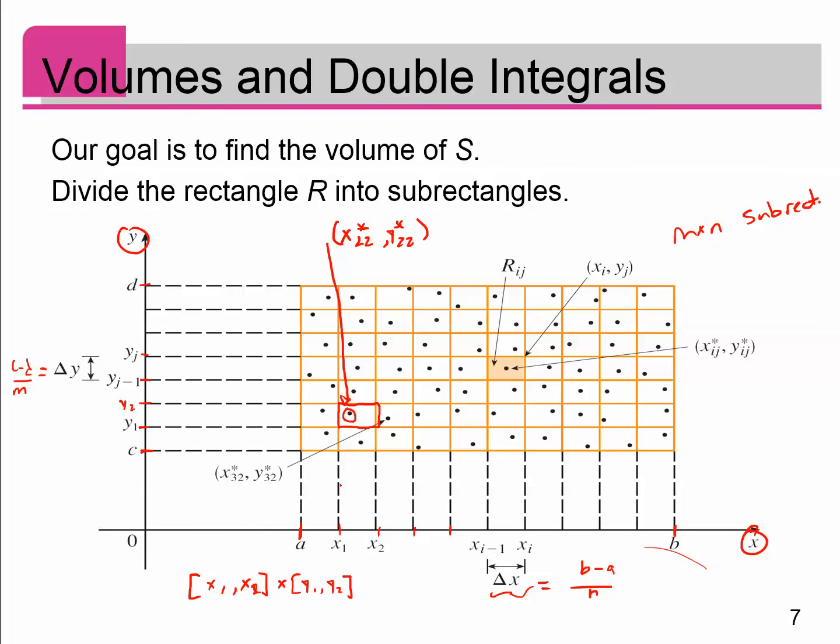So that's 2, 2, and then I'm going to pick a point out of there, call it x star, y star, and there are then, again, m times n test points.